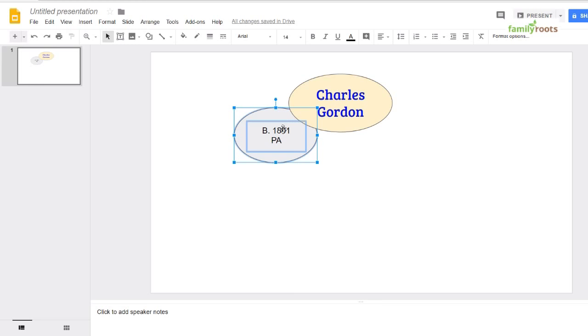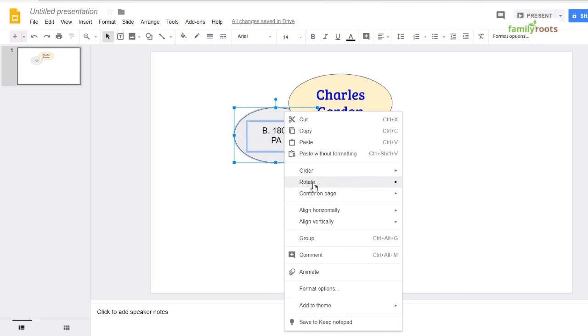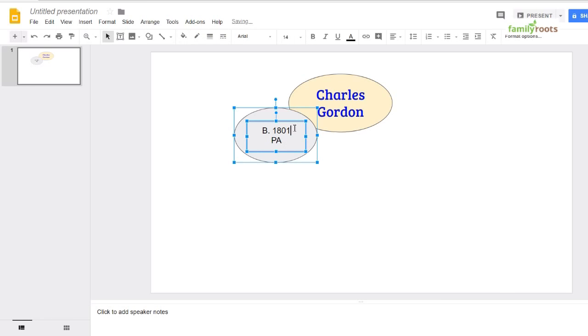type in born 1801, and he was born in Pennsylvania. So once again align the information, and I can left mouse click, click on the oval, right click, group, and now this information is grouped together. When it pops up, if it pops up,